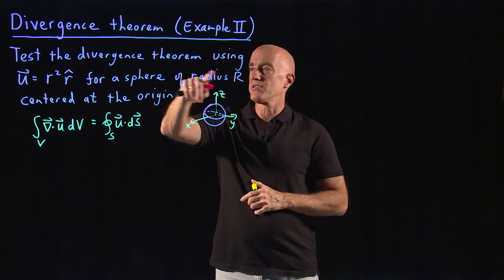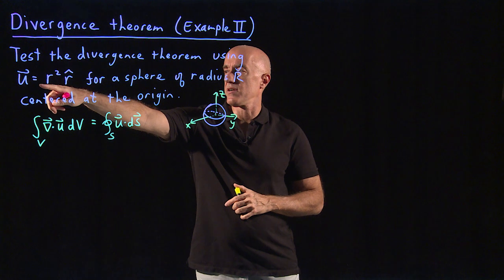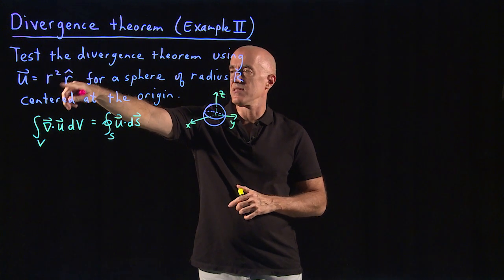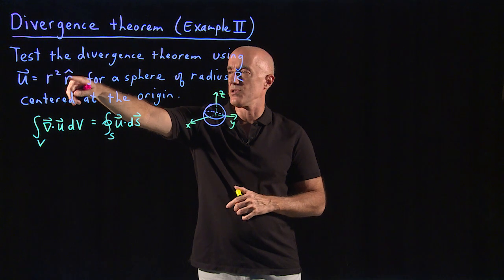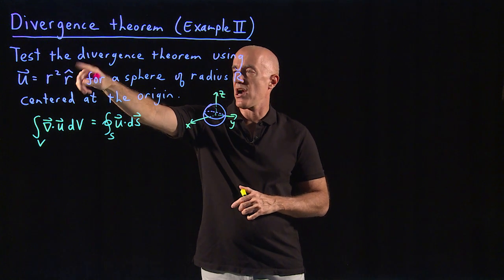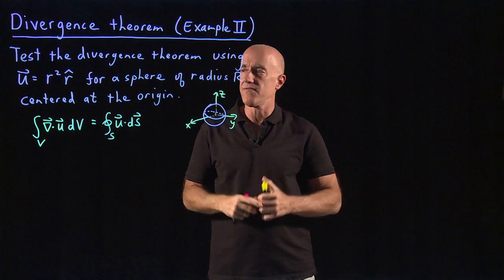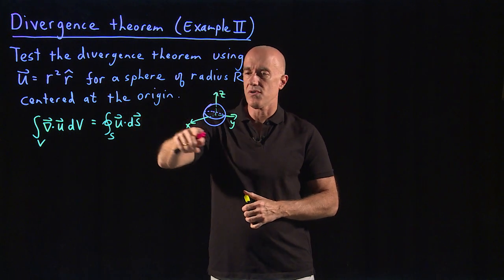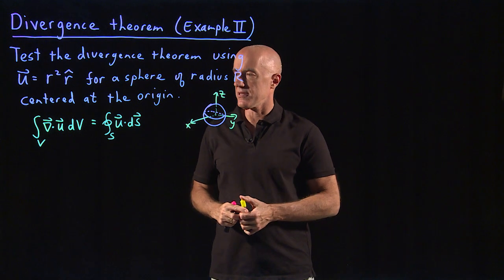I want to test the divergence theorem using a vector field which is r squared, the distance of the point to the origin squared, times r hat, the unit radial vector, for a sphere of radius capital R centered at the origin. So the sphere looks like this.